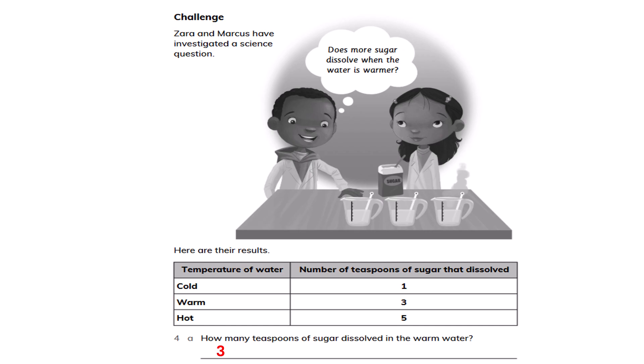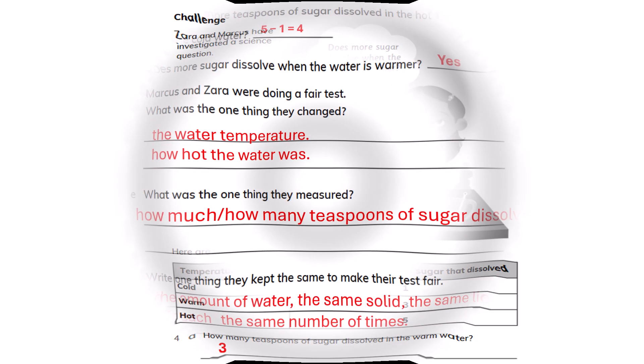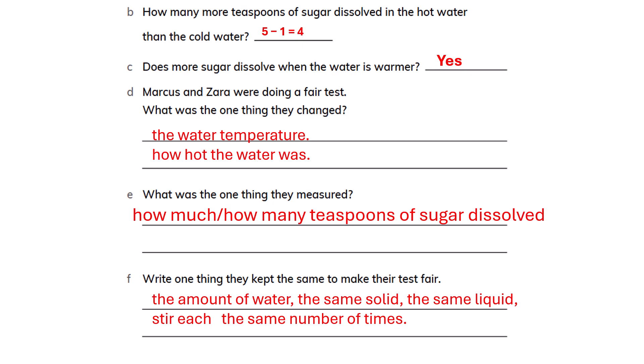Zara and Markus have investigated the science question: does more sugar dissolve when the water is warmer? The results show temperature of water — cold, warm, or hot — and the number of teaspoons of sugar dissolved: 1, 3, and 5. Three teaspoons dissolved in warm water. More sugar dissolved in hot water than cold water: 5 minus 1 equals 4 teaspoons more. Yes, more sugar does dissolve in water when it is warmer.